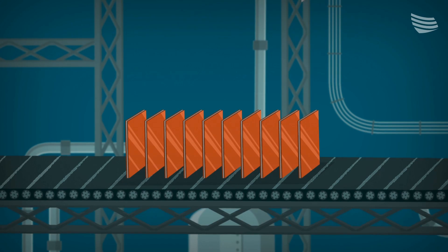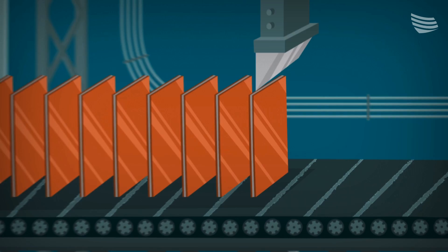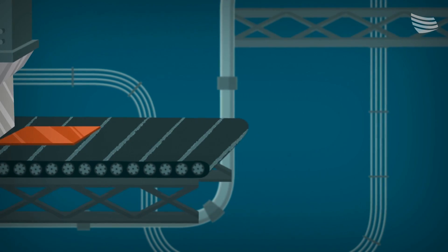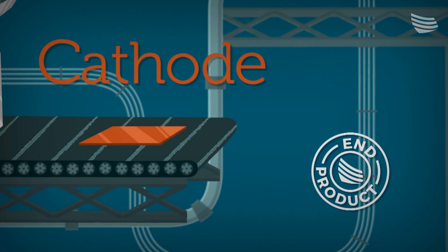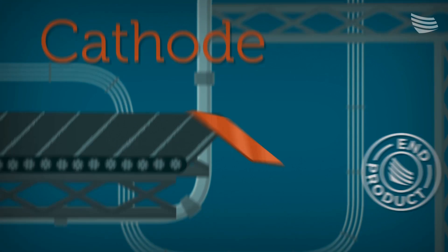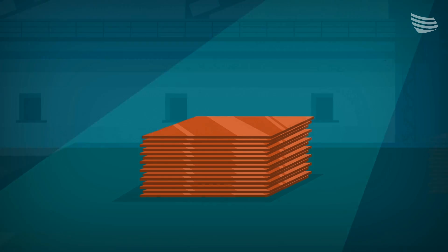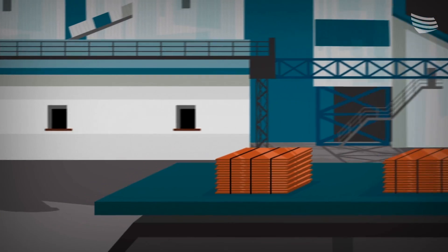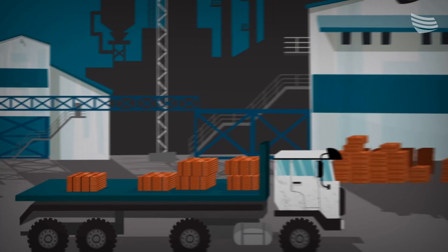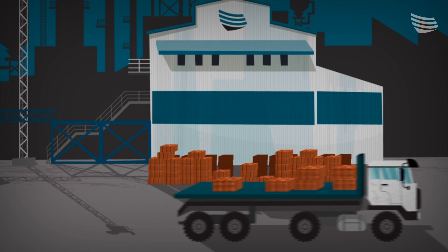The copper has been deposited on both sides of each stainless steel plate, so we have to strip it off. Now we have our star product, the cathode, which is 99.99% pure copper. It measures a square meter and weighs 47 kilos. We package it and send it out, ready to be made into any one of countless everyday items.